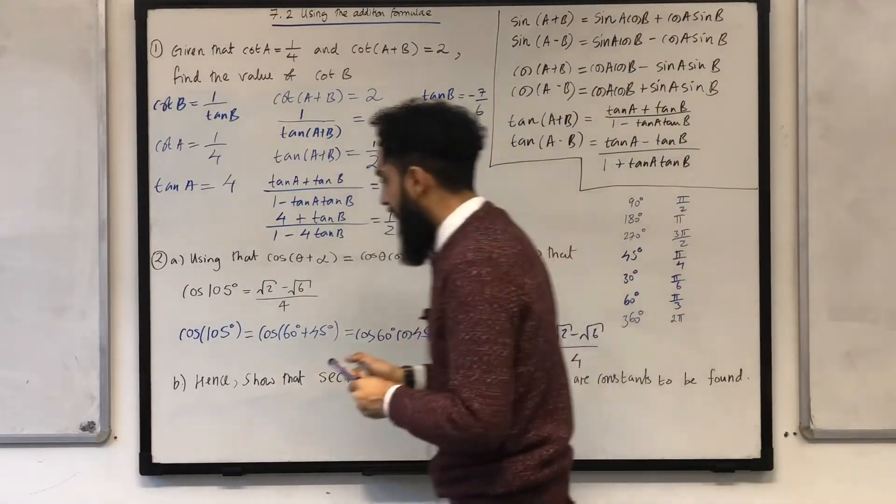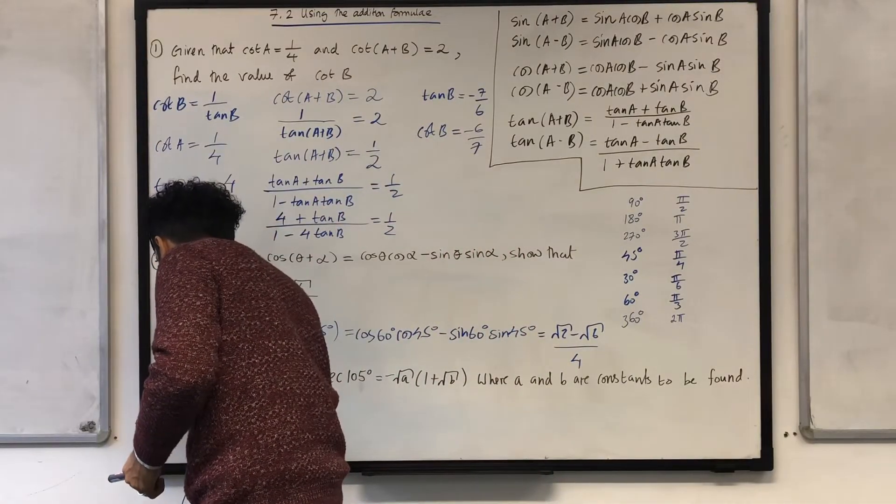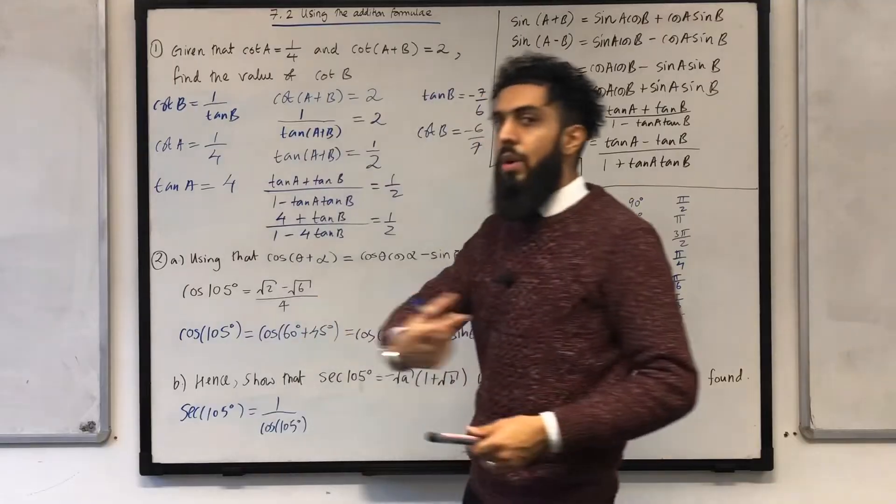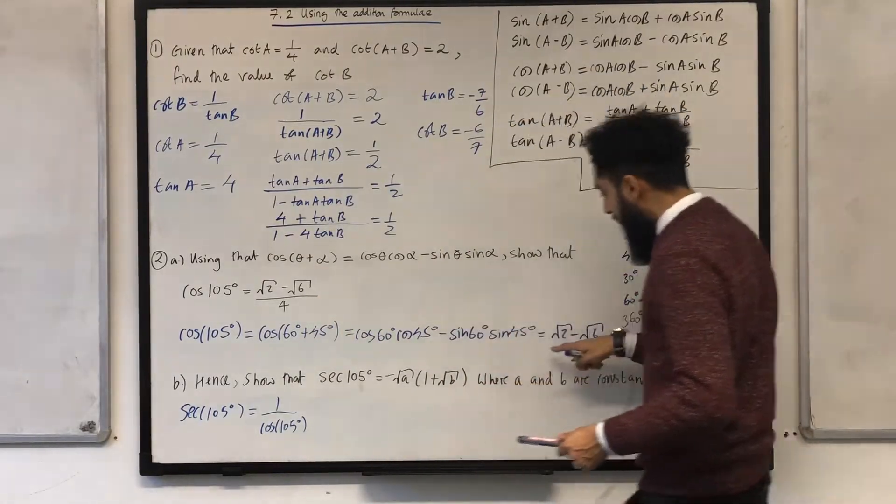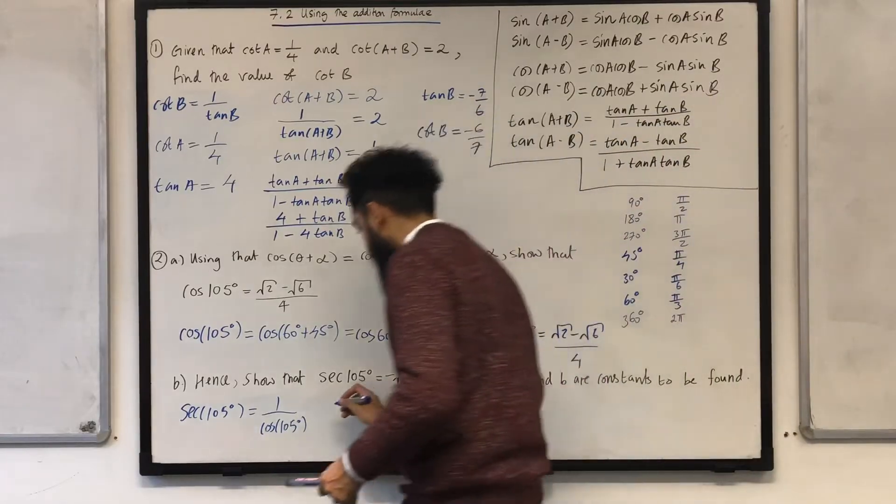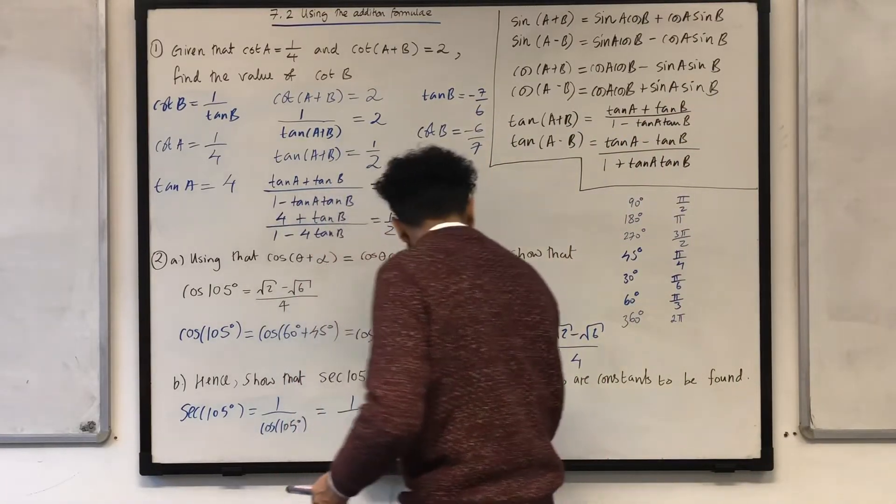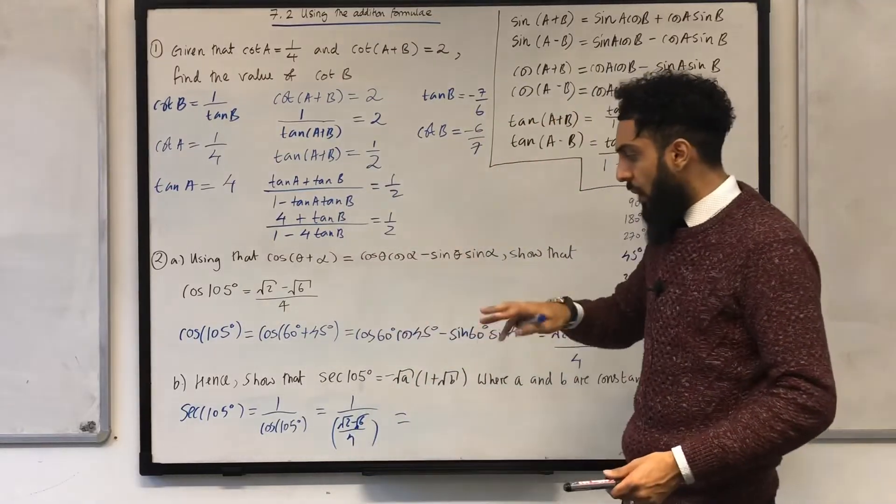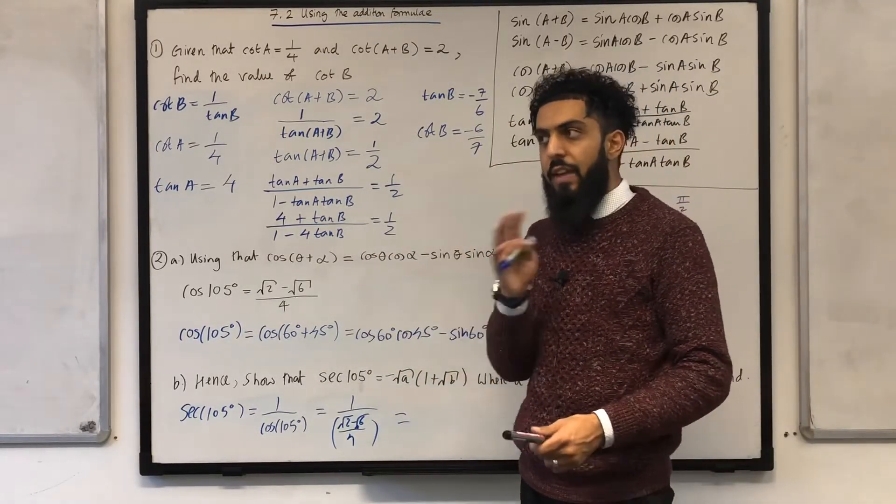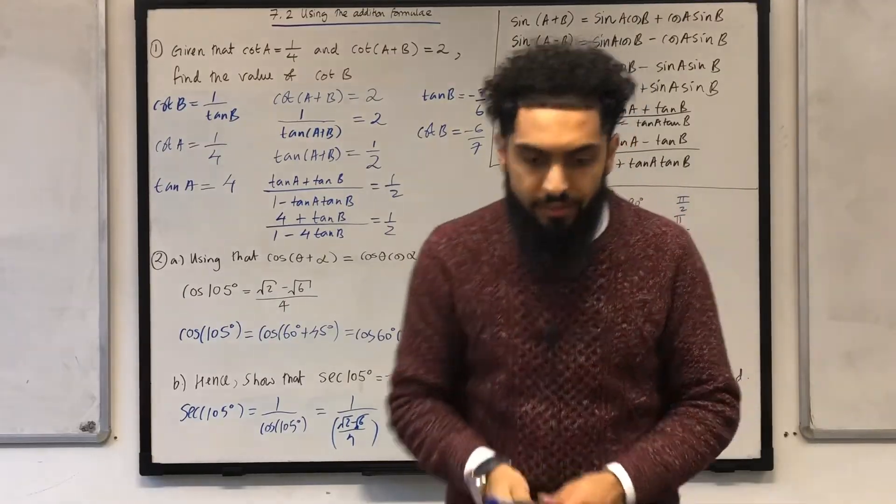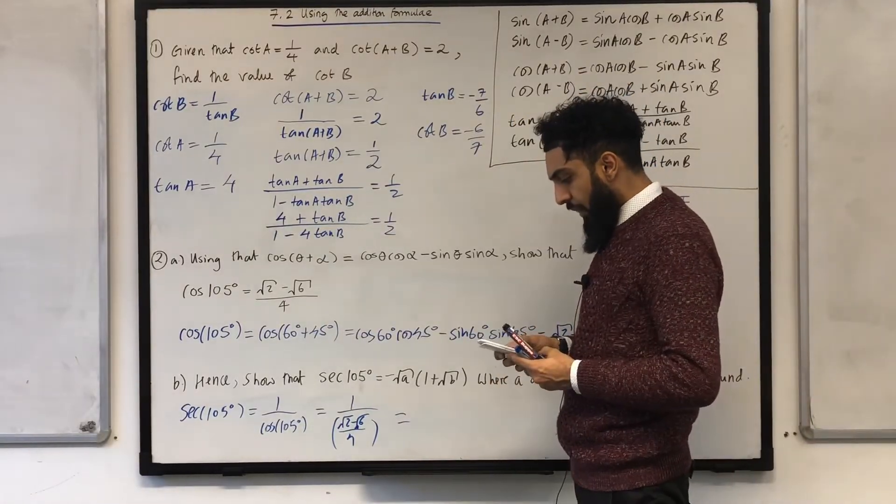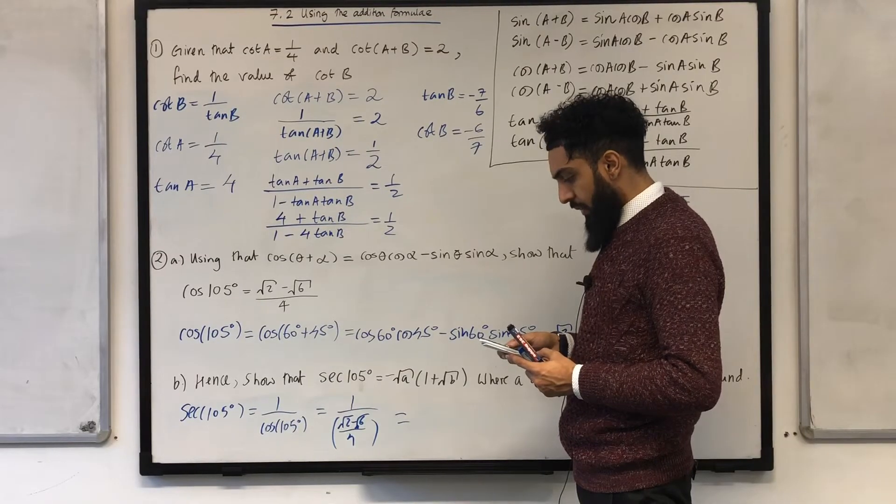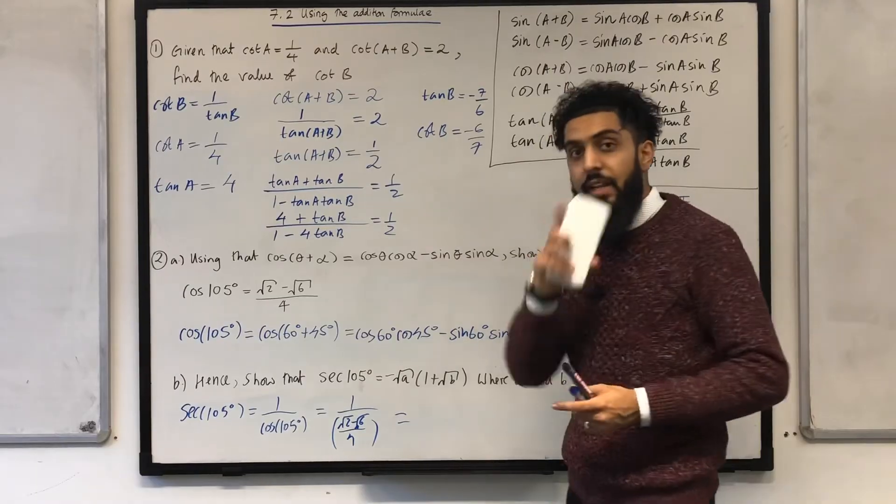First of all, I know that sec 105 degrees is equivalent to 1 over cos 105 degrees. Now, I've calculated cos 105 degrees in part a. It is just equal to this fraction over here. So, I'm going to substitute that in. I get 1 over square root 2 minus square root 6 all over 4, which I know is equivalent to 4 over square root 2 minus square root 6. But when I put that into my calculator, the answer that I get is already rationalised. Okay. So, I'm going to use my calculator over here. So, type in 1 over square root 2 minus square root 6, okay, all over 4. And I get minus square root 6 minus square root 2.